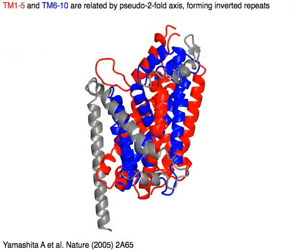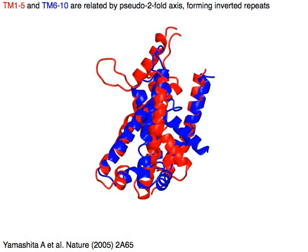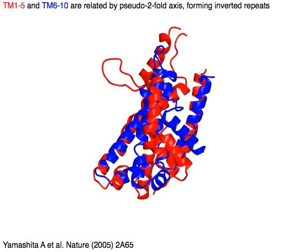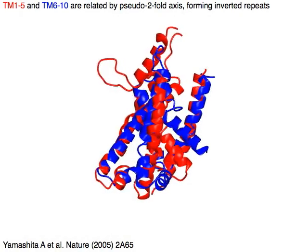TM1 to 5 in red and TM6 to 10 in blue are related by a pseudo-two-fold axis, meaning the NSS family transporters have an inverted repeat structure.